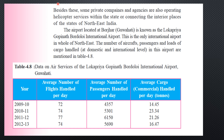The helicopter is a convenient option for air transportation, as it connects interior places in the hilly terrain of the Northeast. The airport located at Borjhar, Guwahati is known as the Lokapriya Gopinath Bordoloi International Airport. You can find out who Gopinath Bordoloi was and share in the comments. This is the only international airport in all of Northeast India.